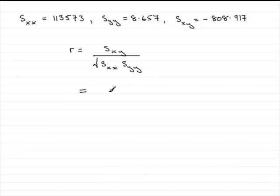So SXY then, we've got minus 808.917, and that's all divided then by the square root of SXX, which is 113573.